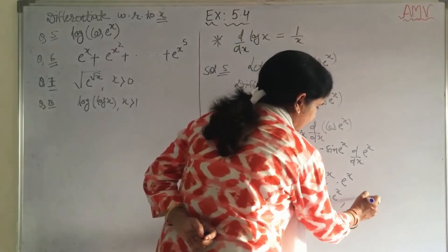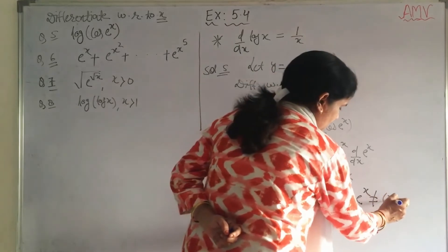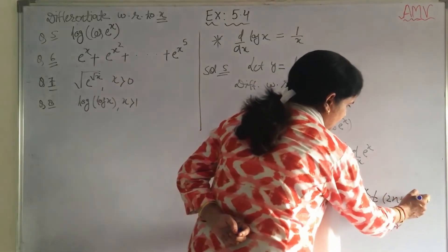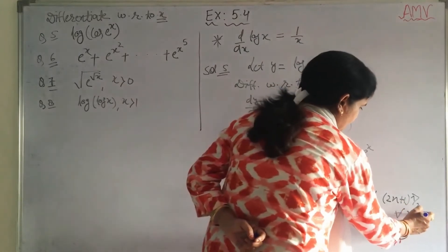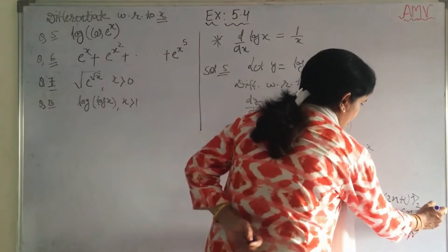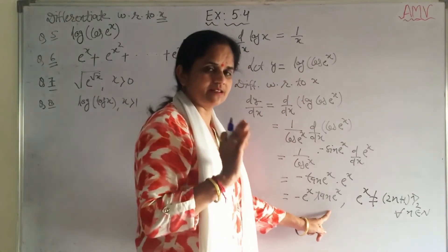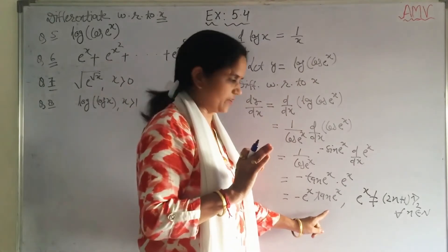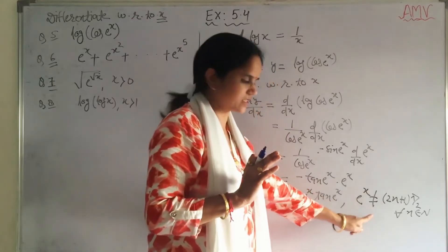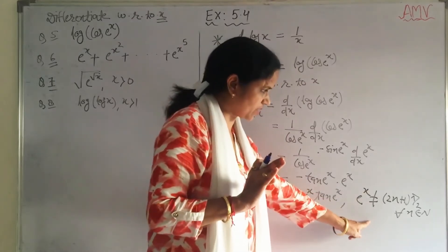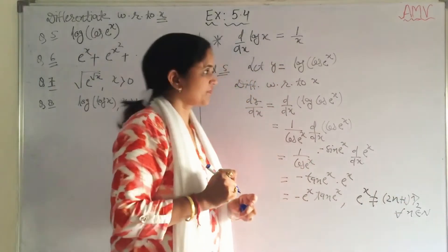Students, you have to write that e^x ≠ (2n+1)π/2 for all n belonging to ℕ, since tan(π/2) is undefined (infinity). So we must state that e^x ≠ (2n+1)π/2.